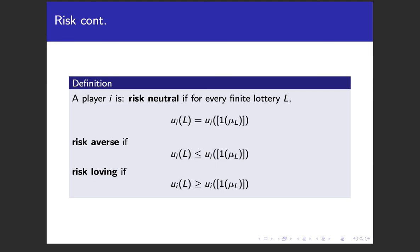A player is risk averse if they prefer to receive the expected value with certainty rather than play the lottery — they want to avoid risk and would rather just get the expectation. A player is risk loving if it's the reverse — they prefer the lottery over receiving the expected value for certain.